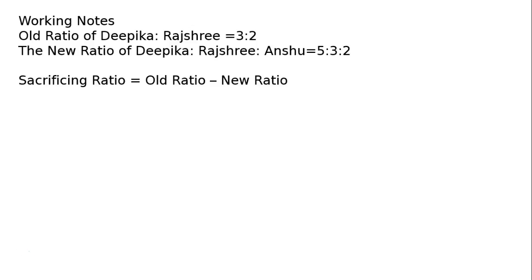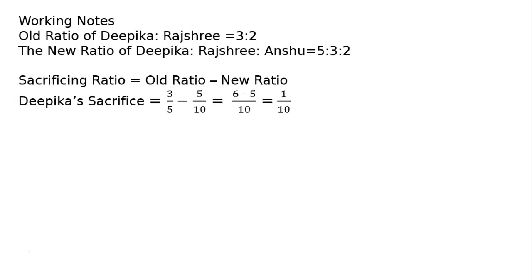Sacrificing ratio is equal to old ratio minus new ratio, directly given to us. Deepika's sacrifice is equal to old share minus new share: 3 by 5 minus 5 by 10. Taking LCM as 10, that is 6 minus 5 all upon 10, which is equal to 1 by 10.